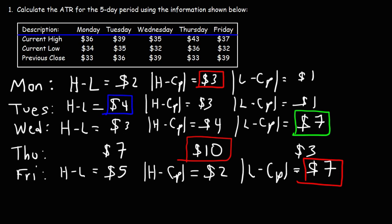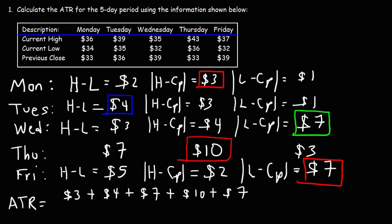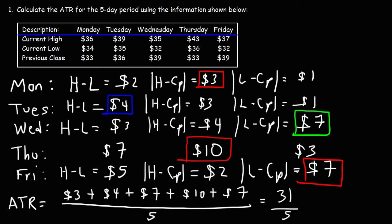Now that we have the greatest true range for each of these five days, we can calculate the ATR — the average true range for the five-day period. We add up all of the highlighted values: Monday was 3, Tuesday was 4, Wednesday was 7, Thursday was 10, and Friday was 7. Thursday was the most volatile day with the highest range. Since we're analyzing a five-day period, we divide by 5: 3 plus 4 plus 7 plus 10 plus 7 equals 31. 31 divided by 5 is 6. So the average true range for the five-day period is 6.